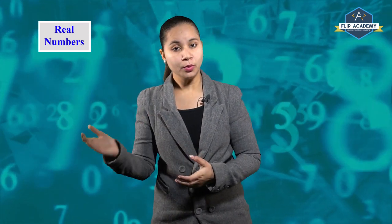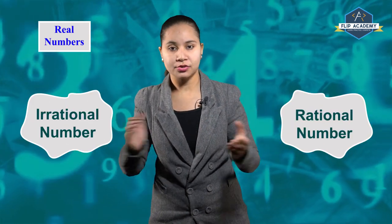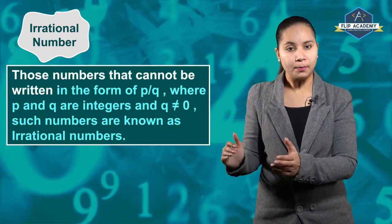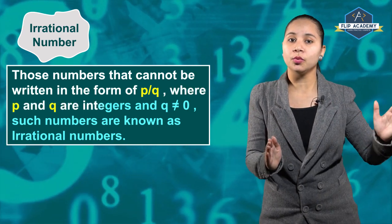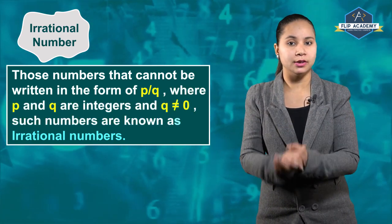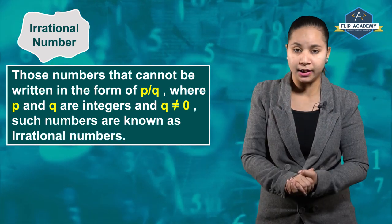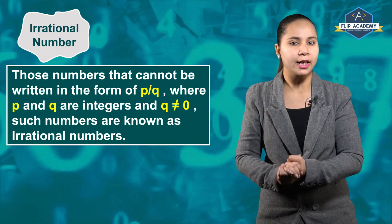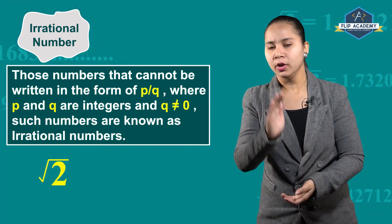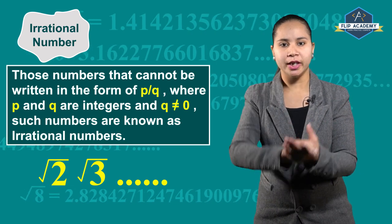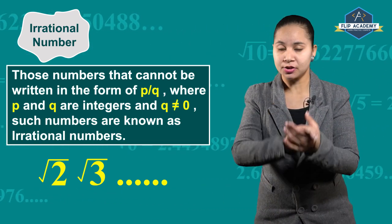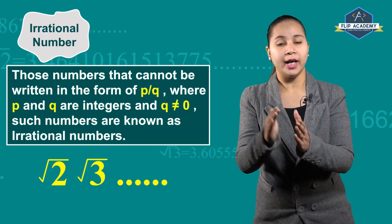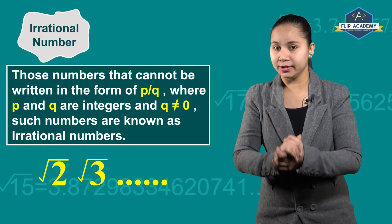Real numbers are further classified into 2 categories — one is rational numbers and the other is irrational numbers. What are irrational numbers? Those numbers that cannot be written in the form of p/q, where p and q are integers and q does not equal 0, are known as irrational numbers. Irrational numbers don't have an exact value.